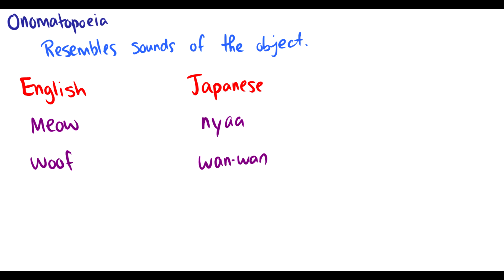The last one: onomatopoeia — however you want to say it. These words just resemble the sounds of the object. In English, if I say meow, you think cat — that is a sound a cat makes. But it's interesting that across cultures these words aren't the same. In Japan, cats say nya. Of course, cats don't really say meow or nya, but given the phonemic inventory of a language — that is, the sounds a language has — we try to simulate those animal sounds as close as we can.